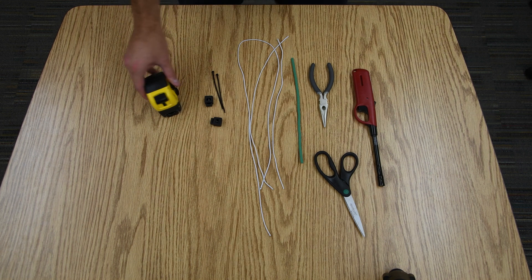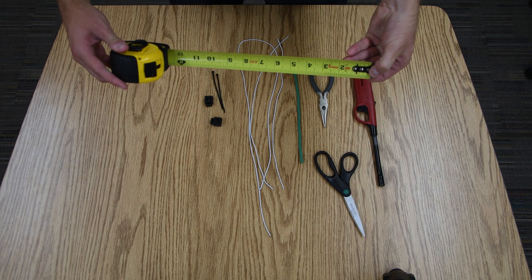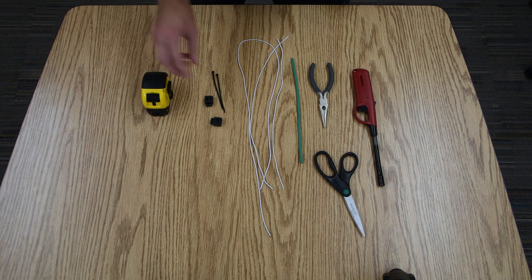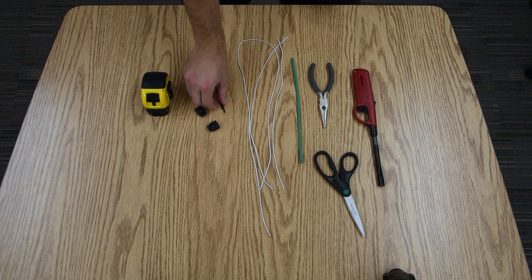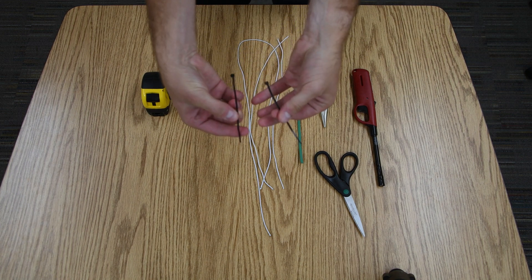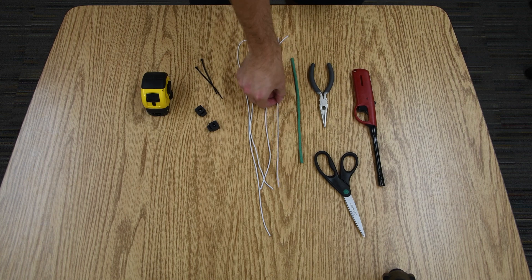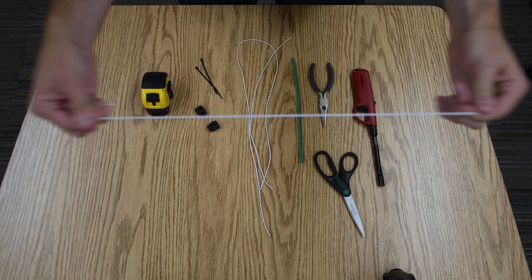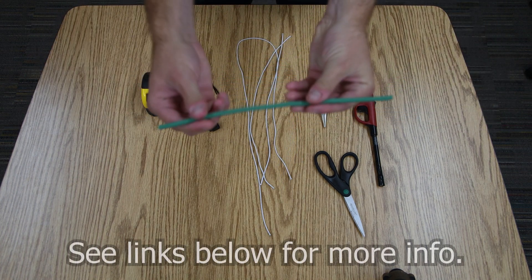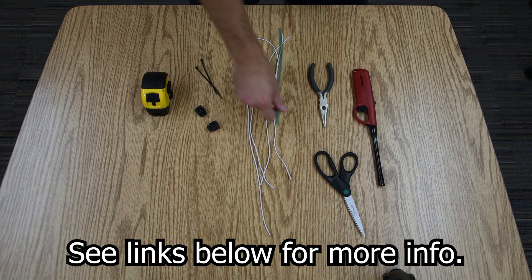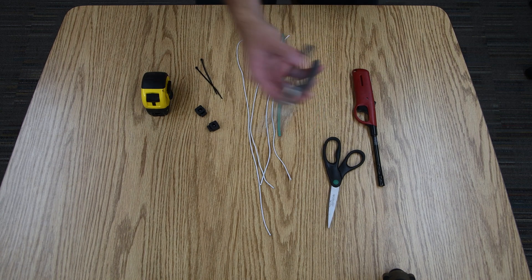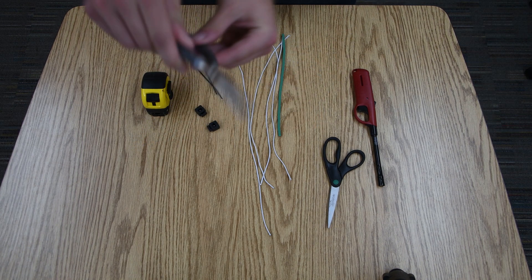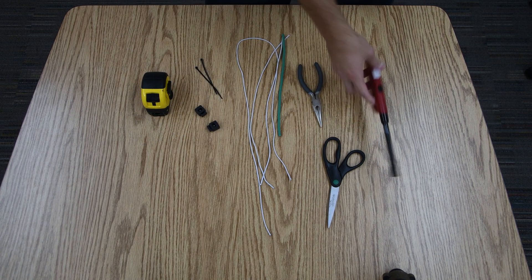First, what you're going to need is a tape measure or a ruler, two clamps, two zip ties, some elastic material, some foam covered wire, a pair of scissors, some pliers with a cutter included, and lastly a lighter.